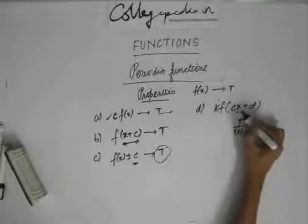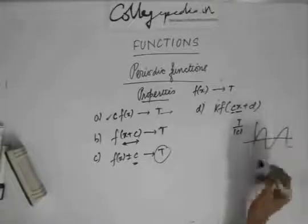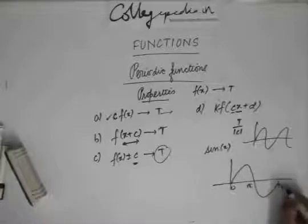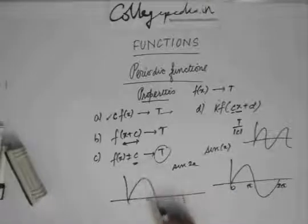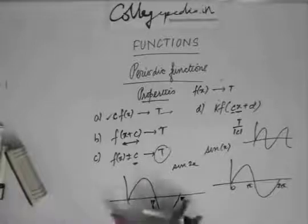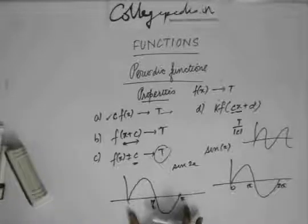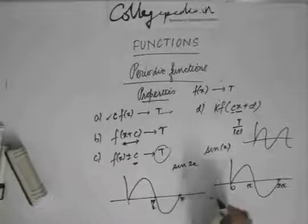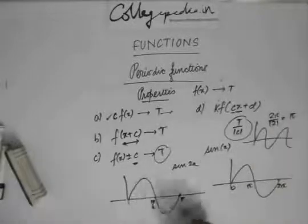When we multiply x by c, there is an expansion or contraction in the x-direction. For example, sine x has period 2π with the graph spanning 0 to 2π. But for sine(2x), the period is π — the graph contracts in the x-direction by a factor of 2. Using the formula, the original period 2π divided by |2| gives π. You can see the period has reduced to π.